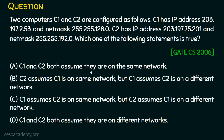Option A: C1 and C2 both assume they are on the same network. Option B: C2 assumes C1 is on the same network but C1 assumes C2 is on a different network. Option C: C1 assumes C2 is on the same network but C2 assumes C1 is on a different network. Option D: C1 and C2 both assume they are on different networks. We cannot blindly choose option D. Obviously they are on different networks, but what C1 thinks about C2 and what C2 thinks about C1 matters here. We need to analyze it deeply.